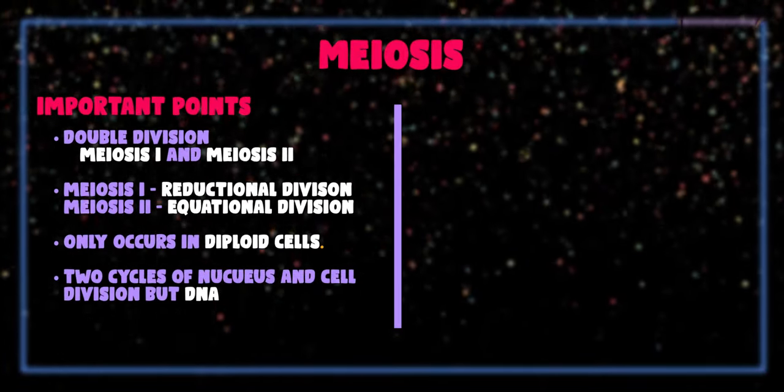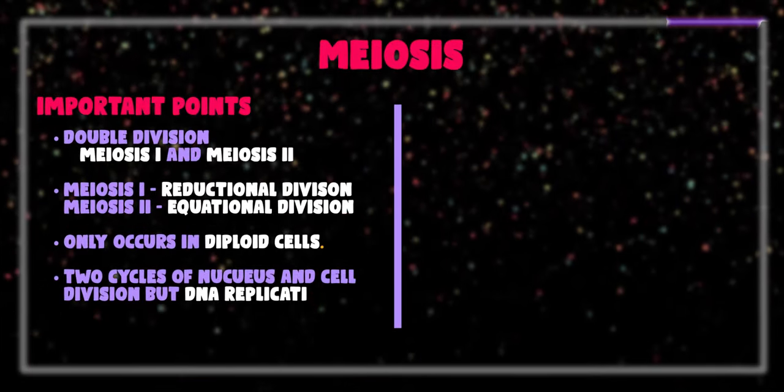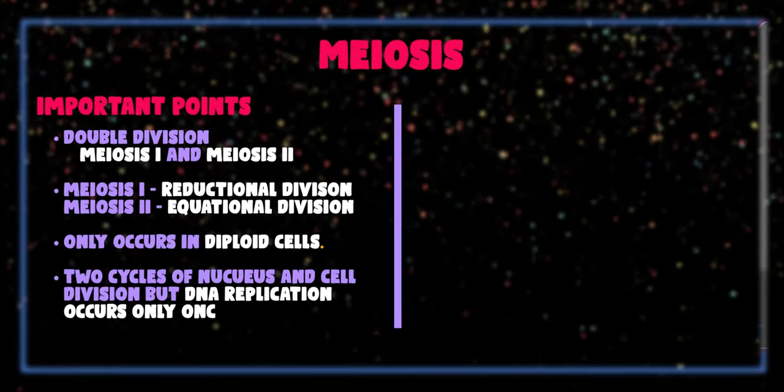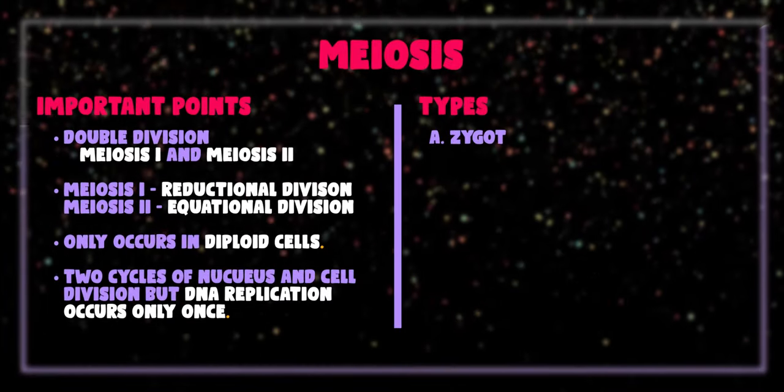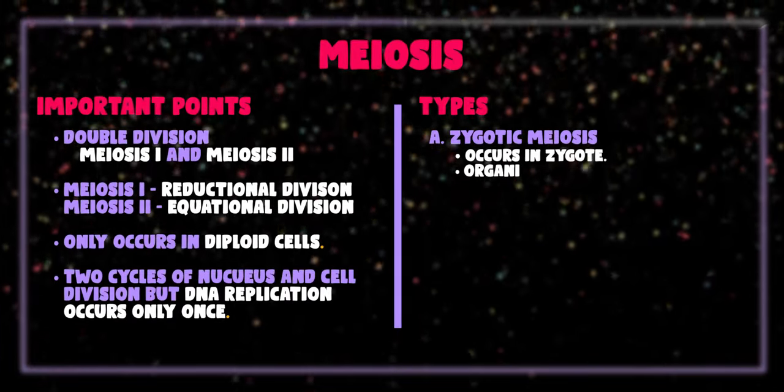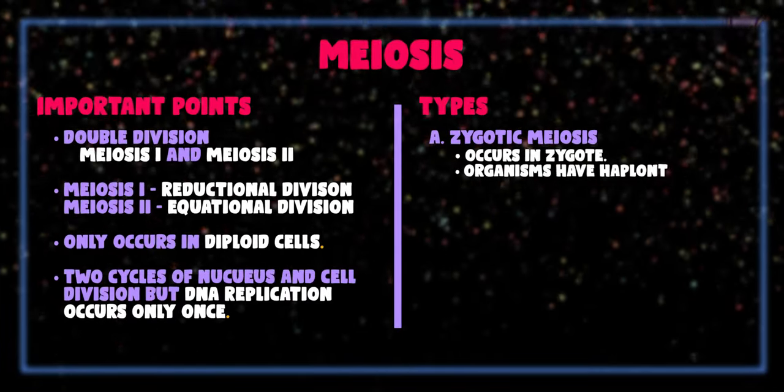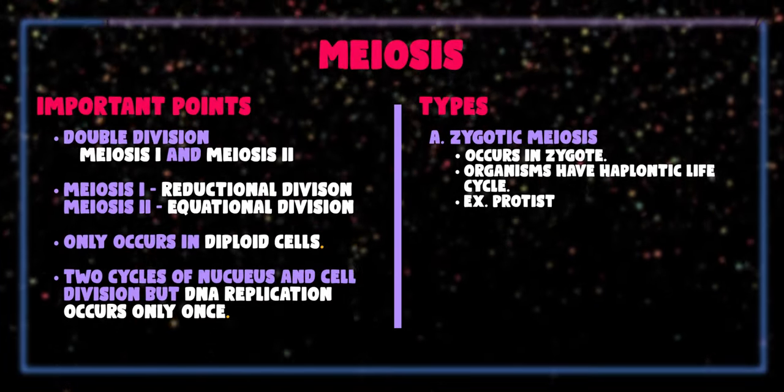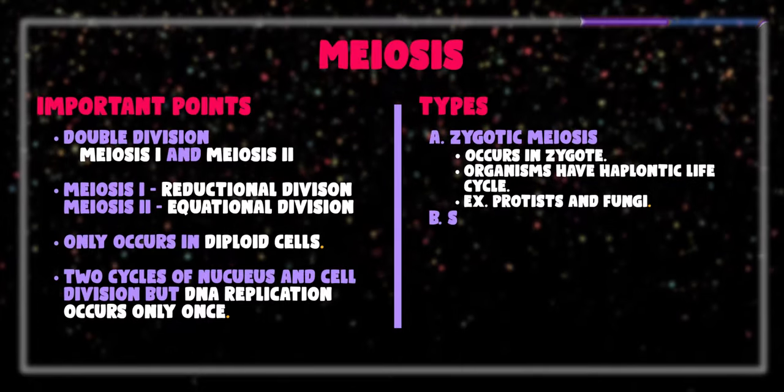Meiosis exclusively occurs in diploid cells and is divided into three types. The first is zygotic meiosis, which occurs in zygote. The organisms undergoing zygotic meiosis have haplonic life cycle, that is their body is made up of haploid cells. For example, protists and fungi show this type of meiosis.